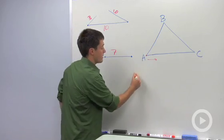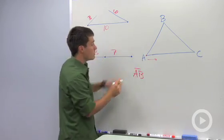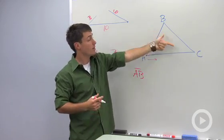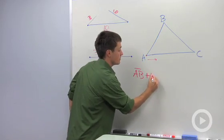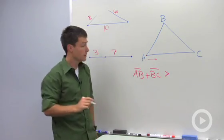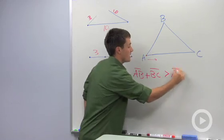Well, we can say that line segment AB or side AB plus side BC must be greater than your third side AC.